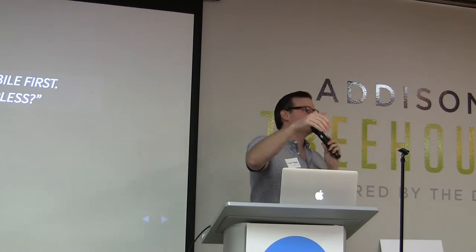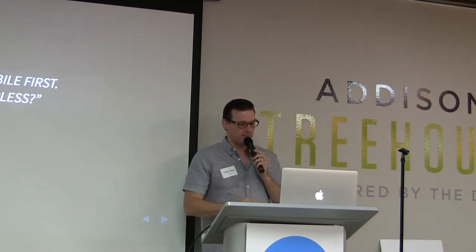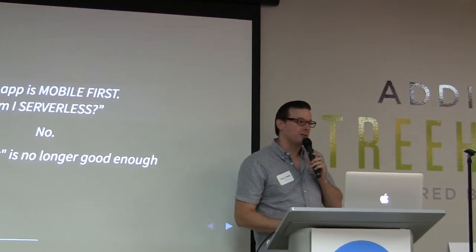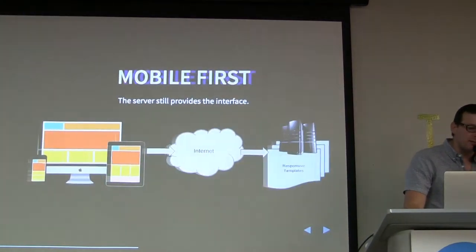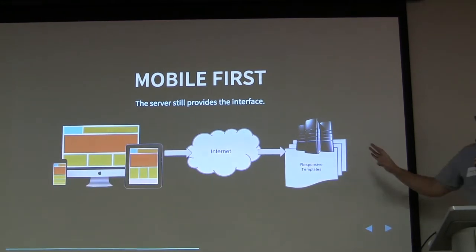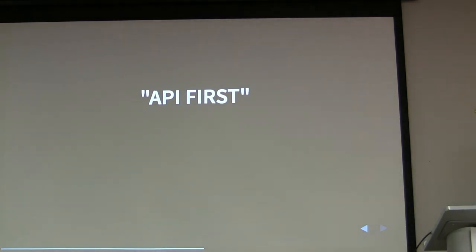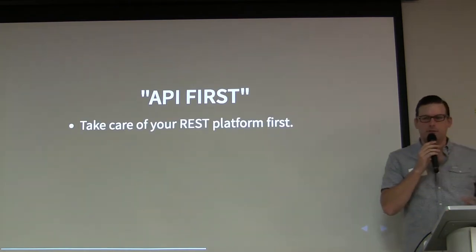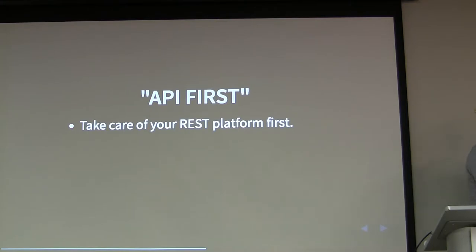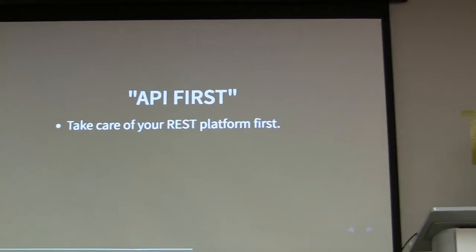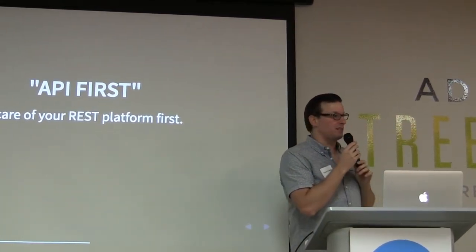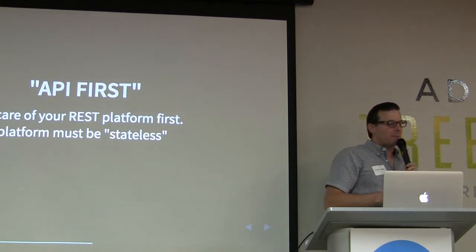Mobile first is no longer good enough. We need a new term. The term I like to anchor to is API first. The reason mobile first isn't good enough is because the server is still sending the templates. The way API first works is you actually focus on your REST API platform first — which includes Mongo. I actually wrote a library called ResourceJS, which takes Mongo's models and reflects those as REST APIs. That classifies as a REST API sitting directly on top of Mongo.